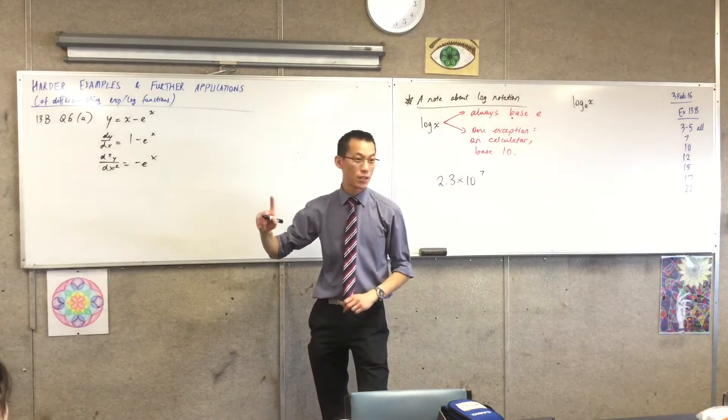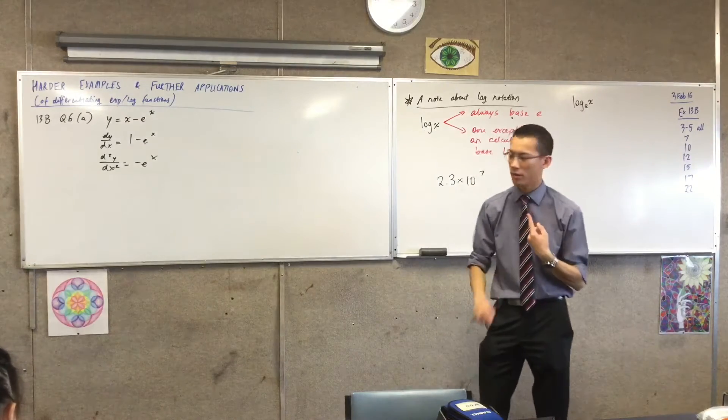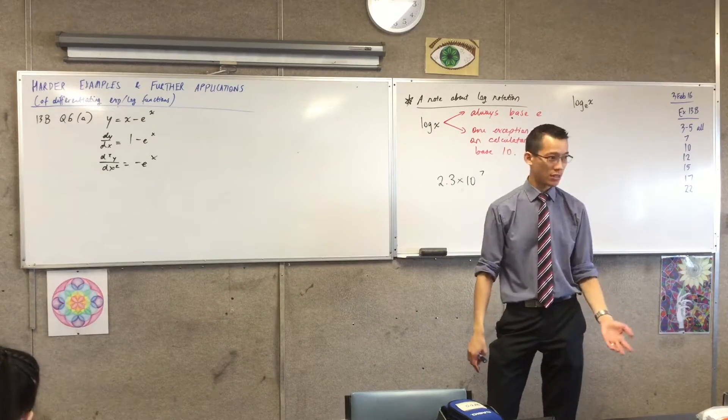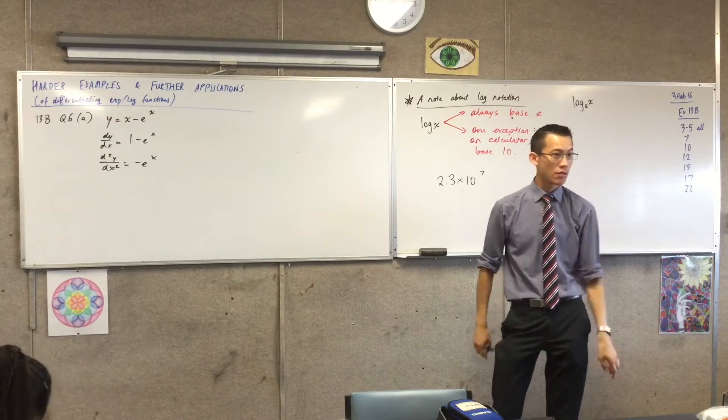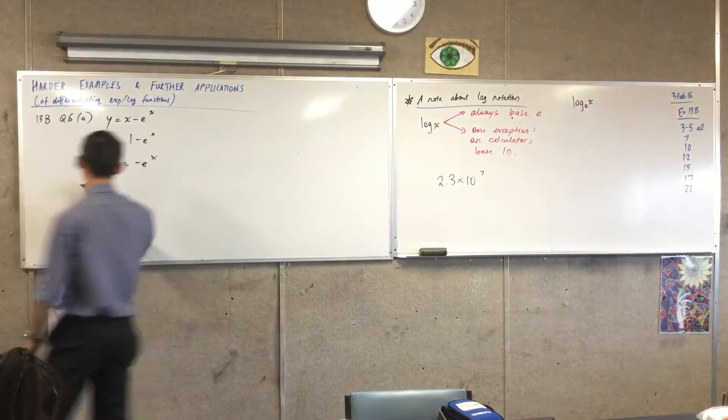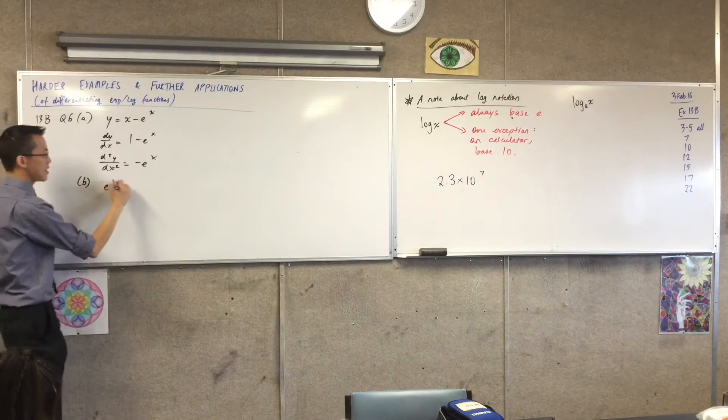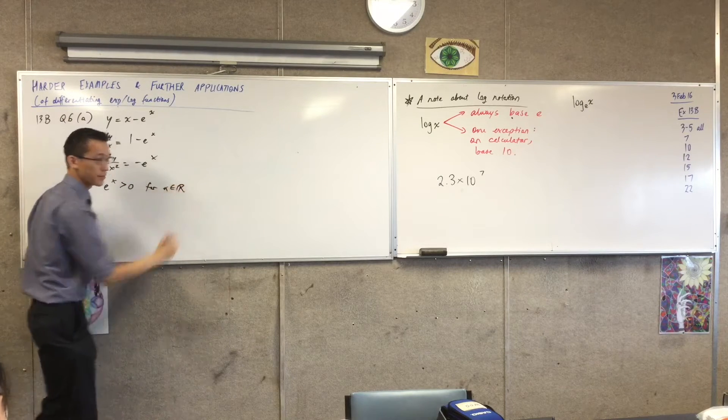Now, we want to have a look at the next part which says, deduce that the curve is concave down for all values of x. Concavity tells us about which derivative? It's this one here. And you can see the argument they're making, right? So for part b,